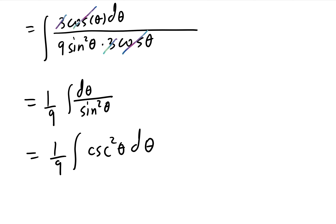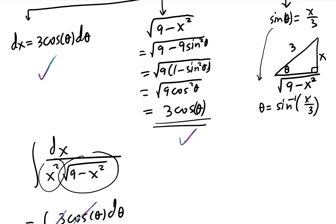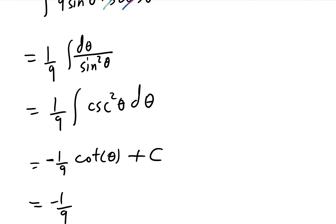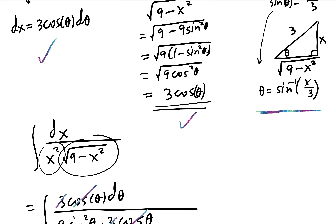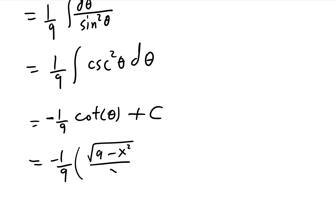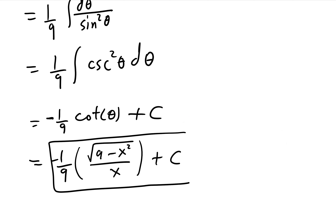We know the formula for ∫csc²(θ)·dθ = −cot(θ) + C. Using the right triangle, cot(θ) = adjacent/opposite = √(9−x²)/x. So the final answer is −√(9−x²)/x + C.